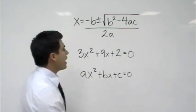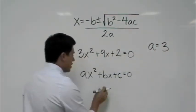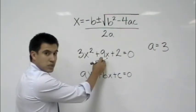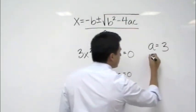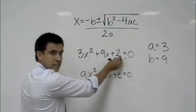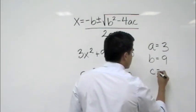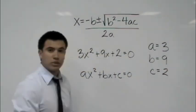Your b is what's next to the x. That will be a positive 9. And your c is your constant here, which is your 2. So c is equal to 2. You want to identify what those are.